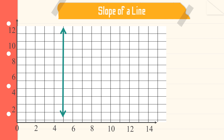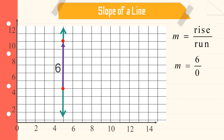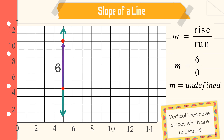This time, we have a vertical line. We pick two points and count the change in y — we have six units. How about the run? Since they have the same x-coordinate, which is five, that is zero. So we have six over zero, and any number divided by zero is undefined. So vertical lines have slopes which are undefined.